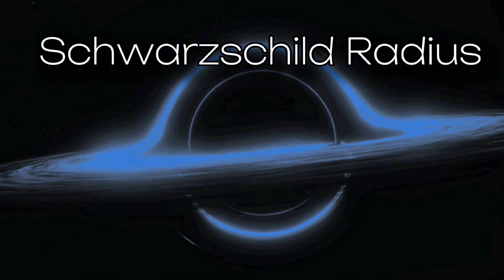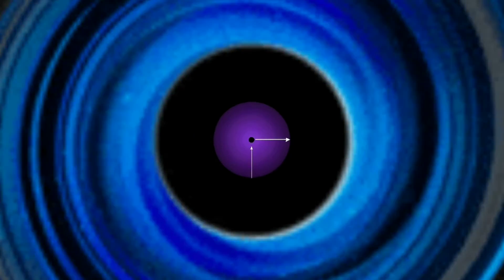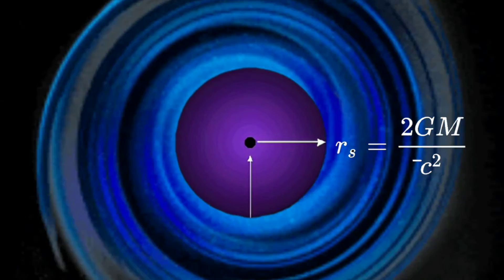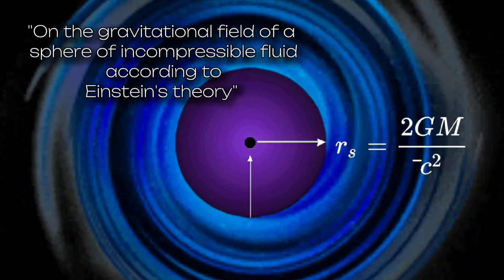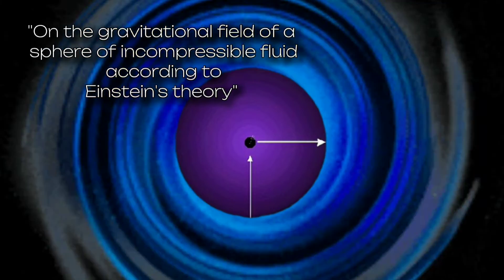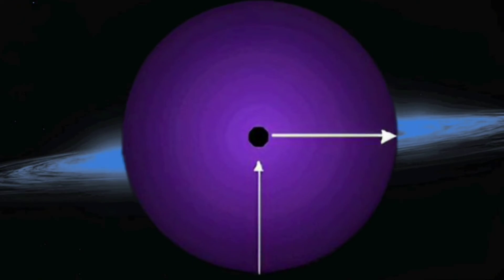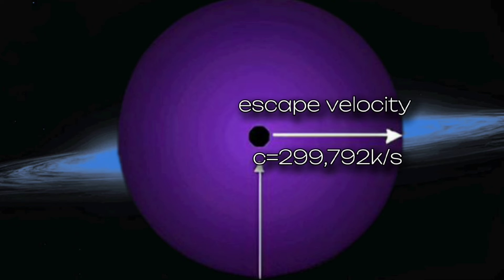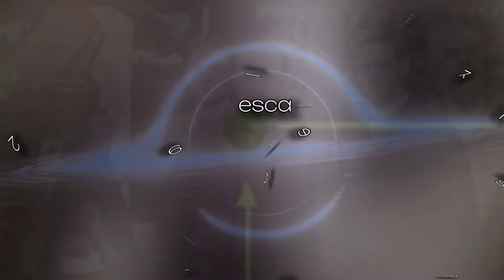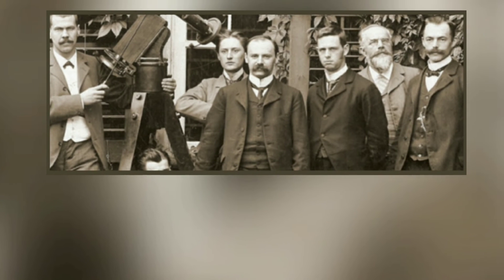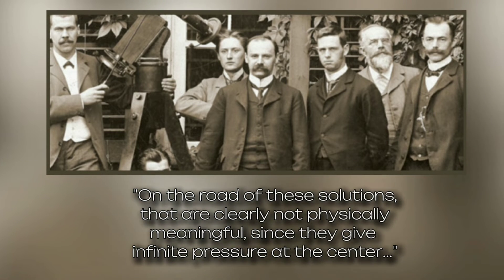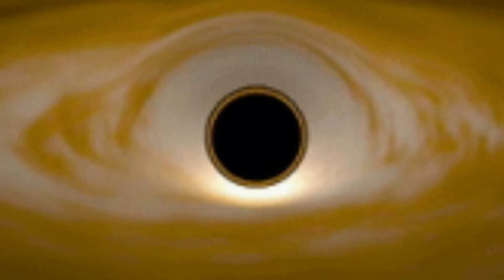8. Schwarzschild's radius. Schwarzschild's solution for Einstein's field equations led to the concept of the Schwarzschild radius, mentioned in his second paper written during the war, which was an extension of his first paper. The second paper, titled 'On the Gravitational Field of a Sphere of Incompressible Fluid according to Einstein's Theory,' explained the radius as the distance from the center of a sphere at which, if all the mass were compressed within that distance, the escape velocity would equal the speed of light. Schwarzschild noted that part of the solution was not physically meaningful, writing of solutions that give infinite pressure at the center — touching on the singularities found within the solution.